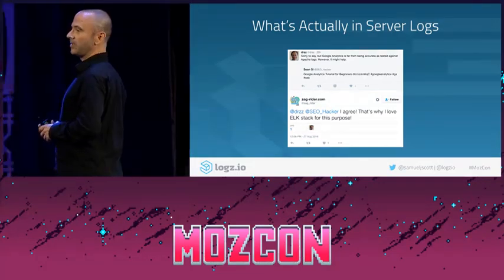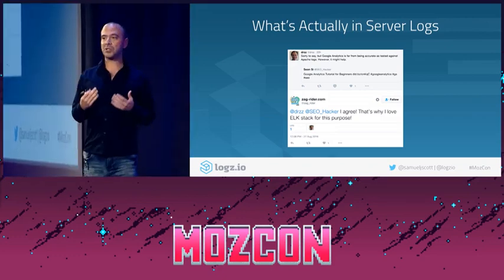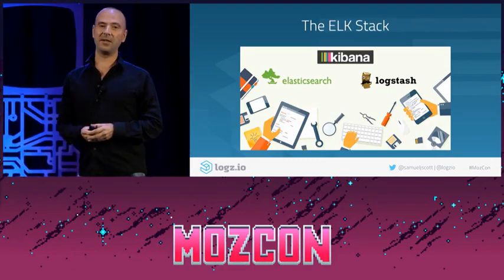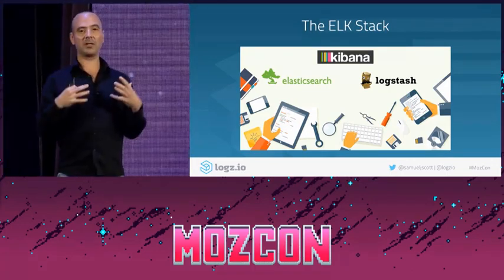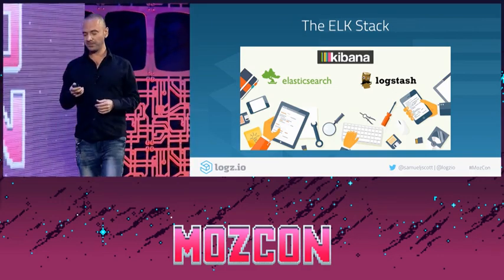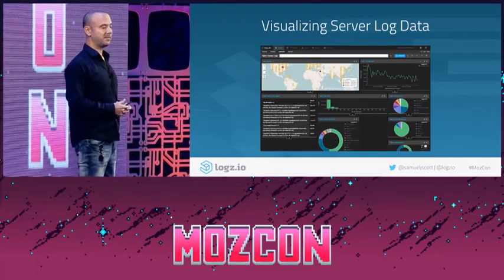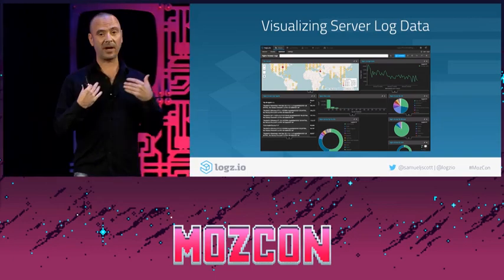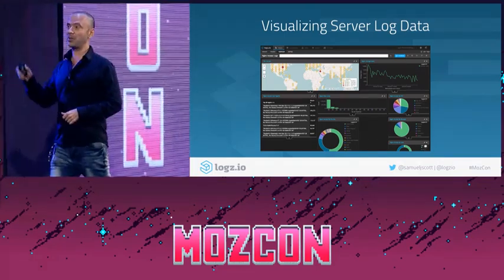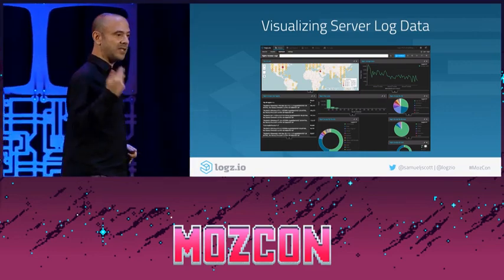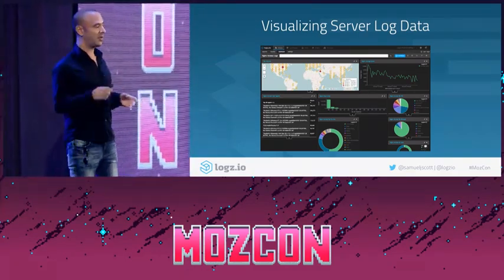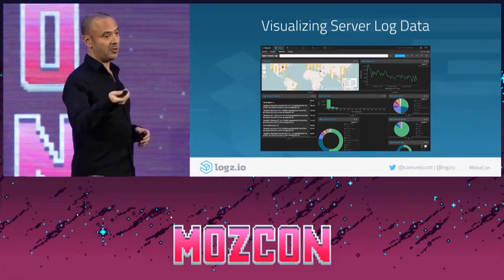So how can you solve this problem easily? I'll tell you what we do in our own company. We use an open source stack of software called the ELK stack, which consists of Elasticsearch, Logstash, and Kibana. Logstash collects all of your logs and ships them into Elasticsearch, which is a searchable database. Then Kibana takes that data in Elasticsearch and visualizes it for you. This is a dashboard we created for our own use to analyze our server logs — a real-time monitoring dashboard. All of you can do the exact same thing with this open source software.